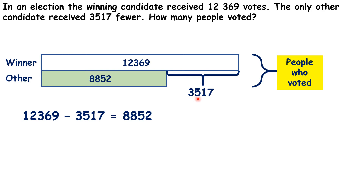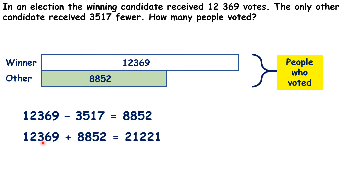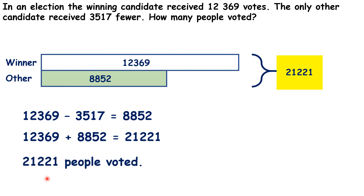Now that we have used our 3,517 to work out the number of votes for the other candidate, we can ignore it. We know the number of votes for the winner and for the other candidate, so we can add them together to find the total number of people who voted. If you use column addition to calculate this, you should get a total of 21,221. So, we know that 21,221 people voted.